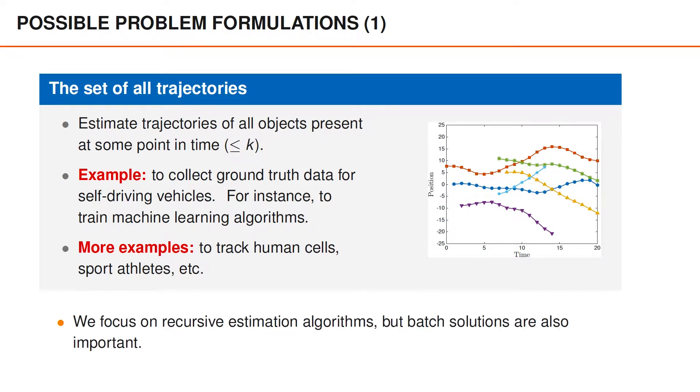In this course, we focus on recursive estimation algorithms, where we assume that we first process the measurements at time 1, then at time 2, and so on. However, for some of the applications that we have in mind, it is also reasonable to consider batch processing of the data, and assume that we can process all data in one go. The set of trajectory representation is also useful for those settings, but we do not discuss such algorithms here.